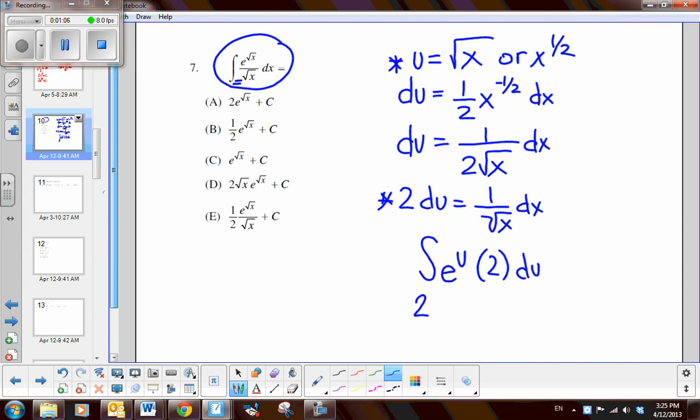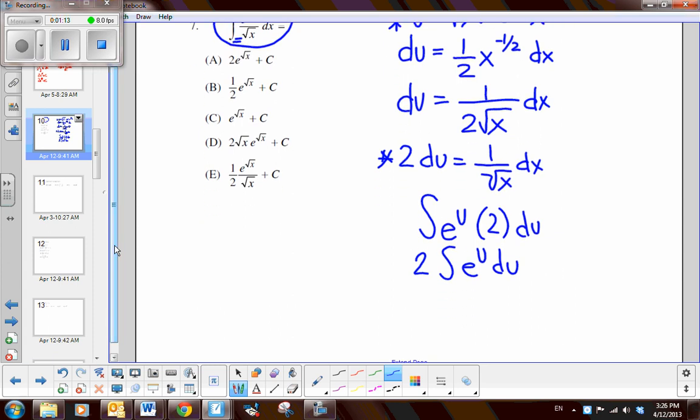So I bring the coefficient to the front, e to the u, du, and we know that the antiderivative of e to the u is e to the u. So I get 2 e to the u plus c, and then replace u with the square root of x. So 2 e to the square root of x plus c. So the answer is a.